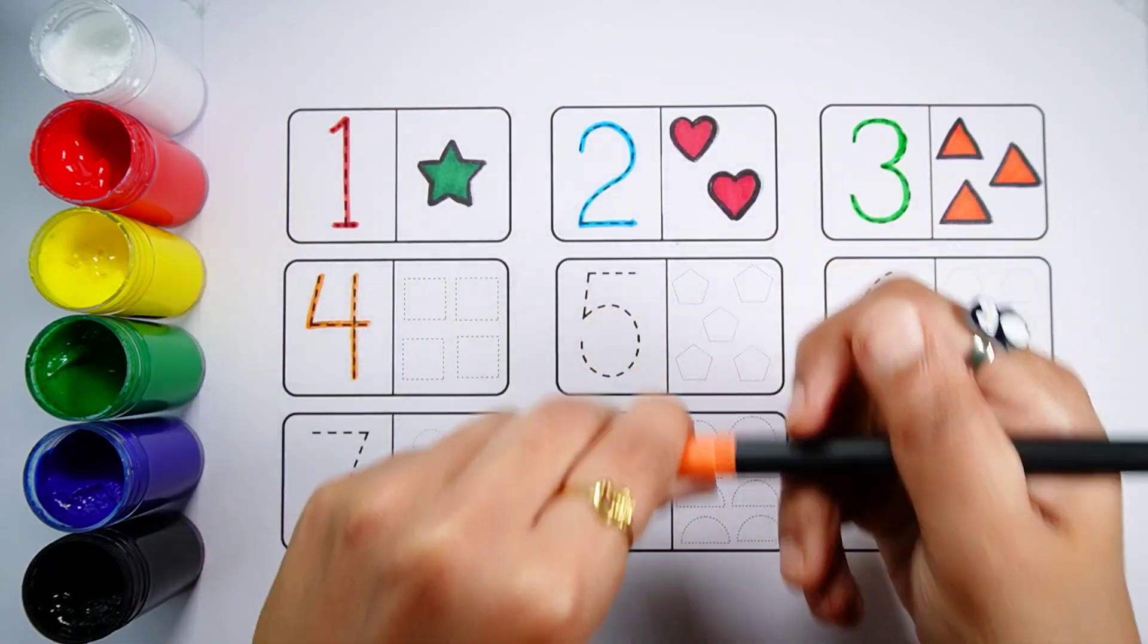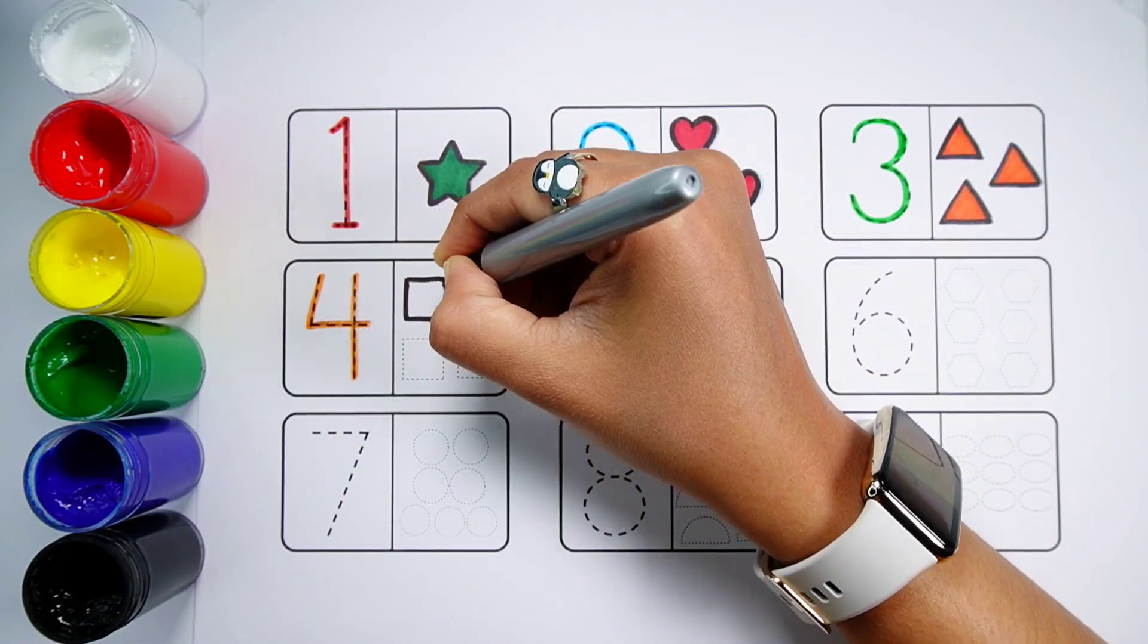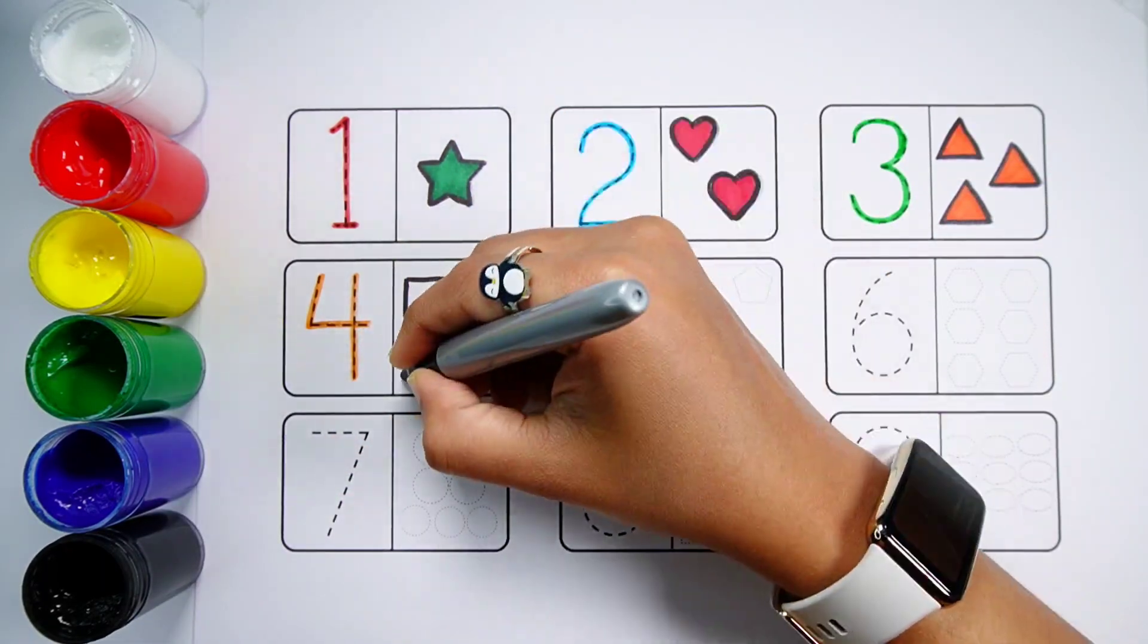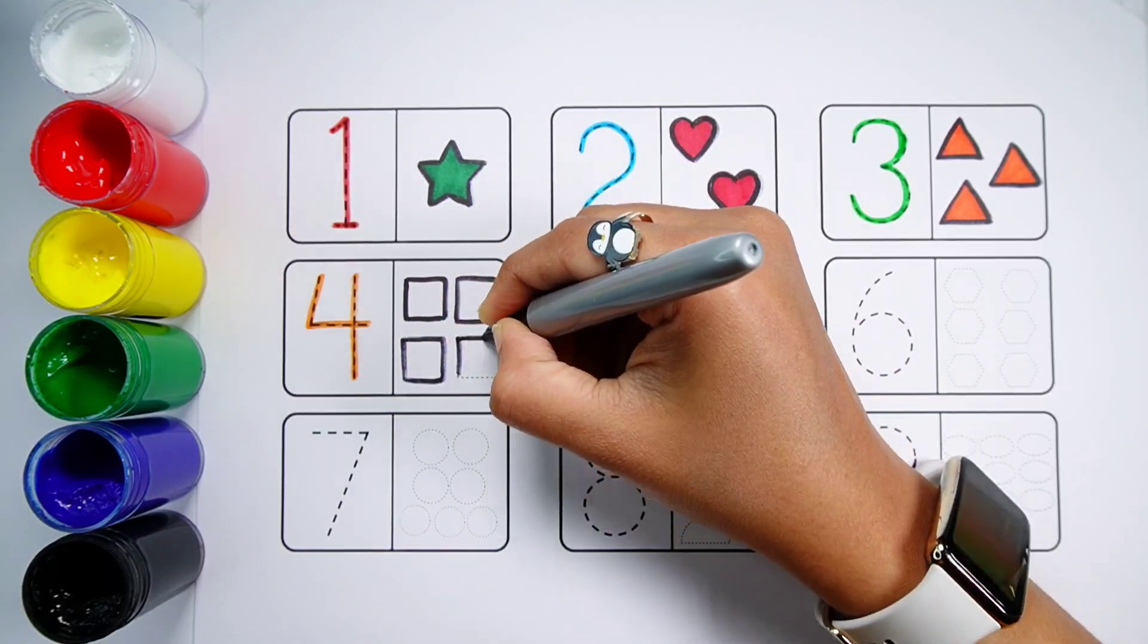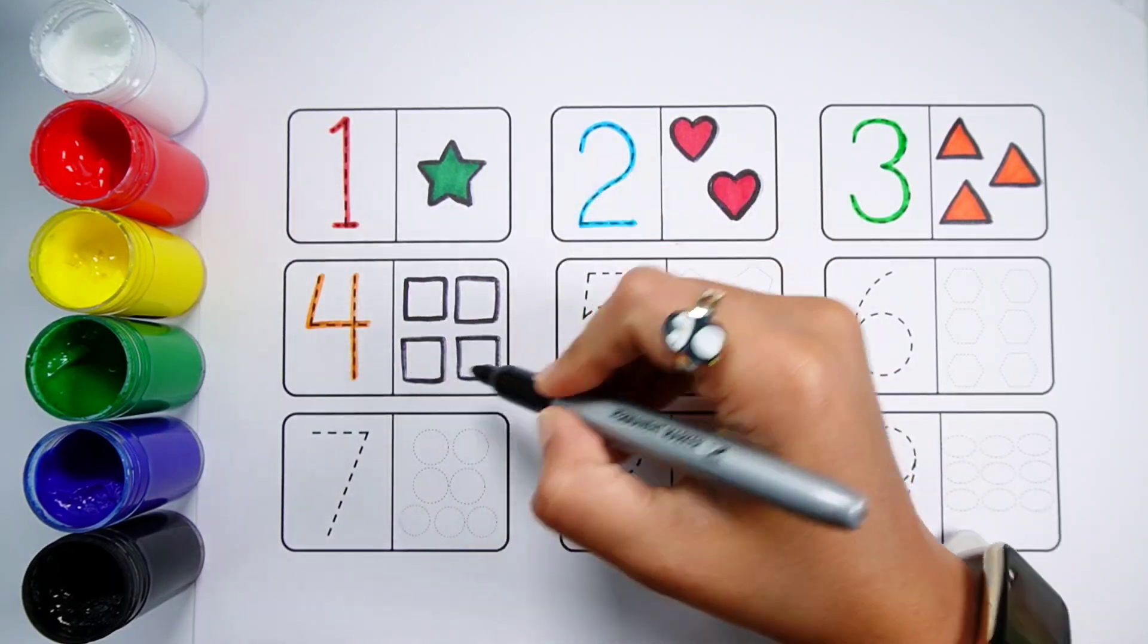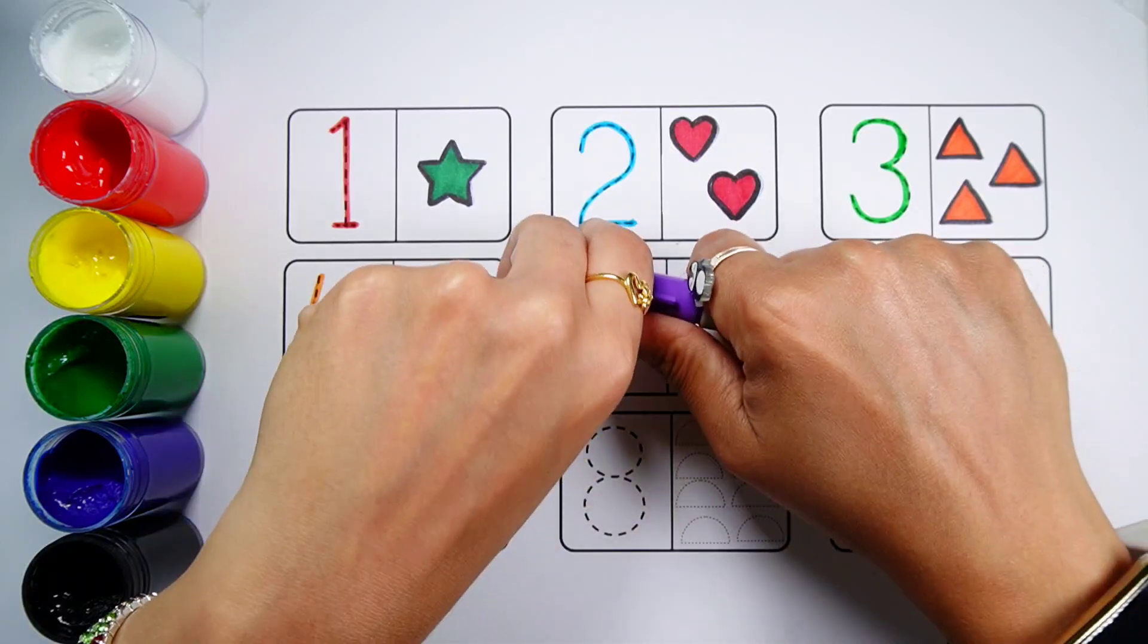Number 4. One, Two, Three, Four. Four Squares. Violet Color.